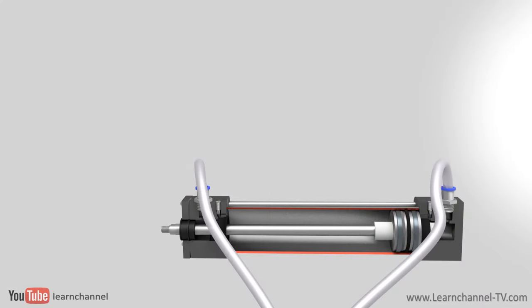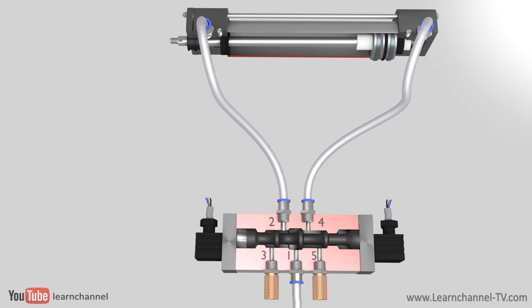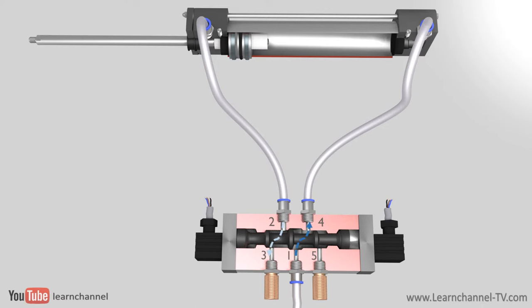Normally, double-acting cylinders are actuated by a directional spool valve with five ports. Our wave valve, shown here, has two switching positions. So you call it five by two valve.